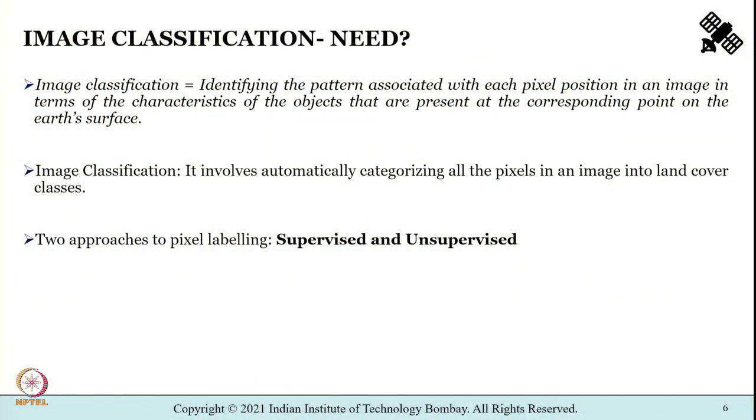We shall start with spectral pattern recognition, which utilizes the values of a pixel — let it be backscatter values or digital numbers in various wave bands. To summarize, we shall be covering two approaches to pixel labeling: one is supervised, and second is unsupervised. We will also get an introduction to fuzzy classification, but that shall come later. For now, understand that there are broadly two approaches to pixel labeling: supervised and unsupervised.